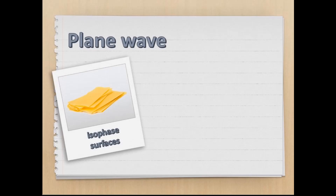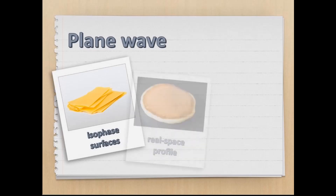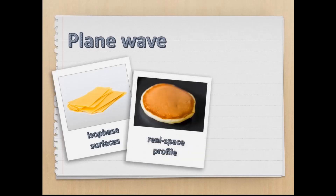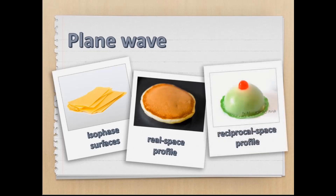In the real space, a plane wave would appear flat and uniform, very much like a pancake, while in the momentum space, it would have a Gaussian profile, very similar to the profile of a Neapolitan Cassata.